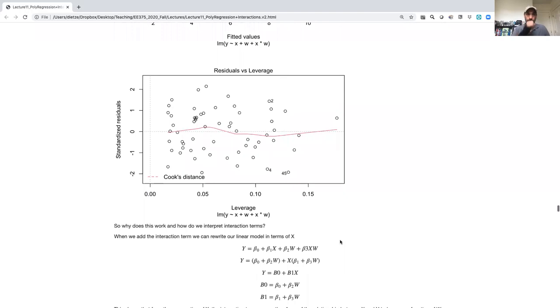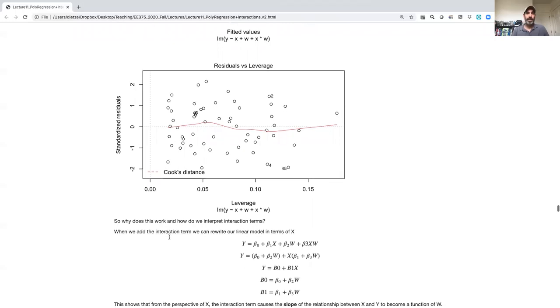So why does this work and how do we interpret this interaction term? So the key point here is that we can take our model here, intercept plus beta 1 x beta 2 w plus beta 3 x times w, and refactor this. Before we refactored that how beta 0 plus beta 2 w, put that in parentheses as the new intercept. Here I'm going to take beta 1 and beta 3 and factor out the x. So I'm going to take those two terms, put them together, and then realize that there's an x in both of them and factor that out.